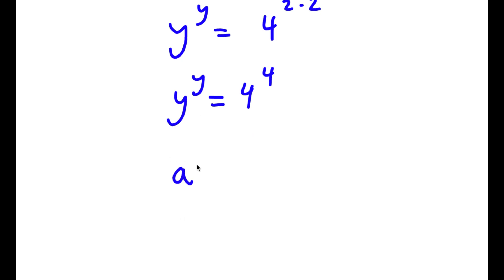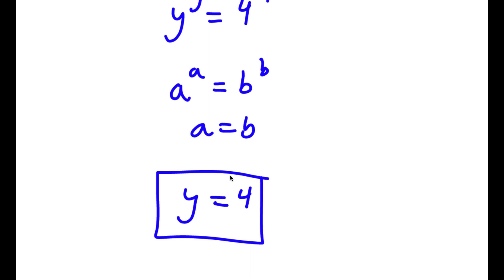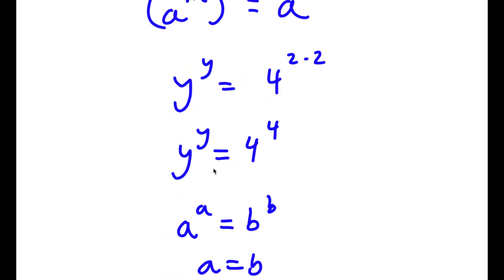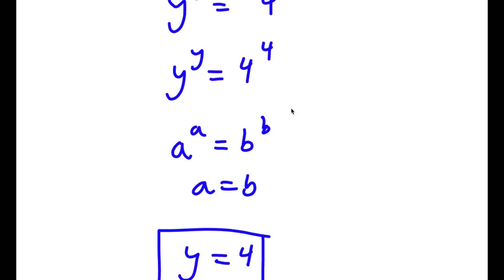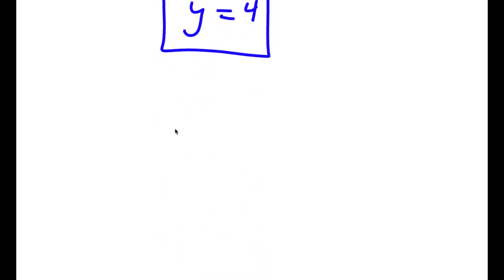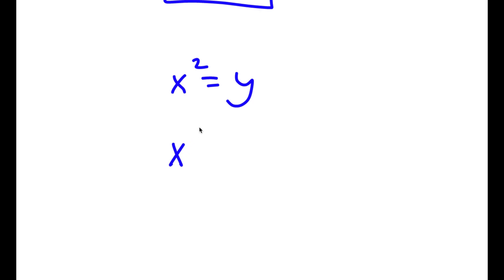Now if I have something in the form a to the power of a is equal to b to the power of b, this means that a is equal to b. So in this case y is equal to 4. Now however we aren't done yet, because remember how we set x squared equal to y. So x squared is equal to y and we know that y is equal to 4, so we have x squared is equal to 4.